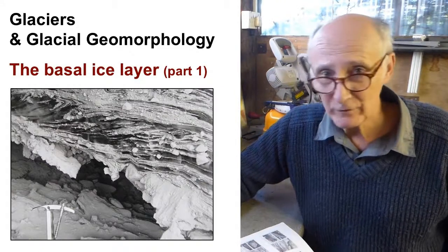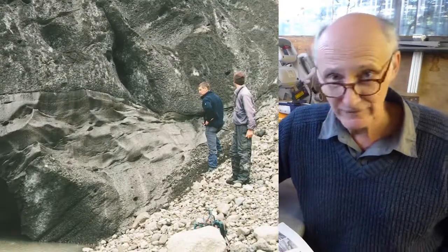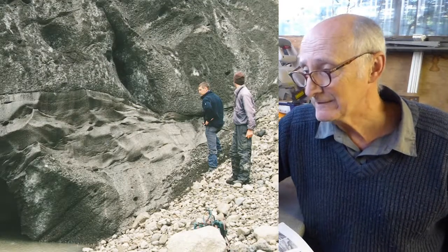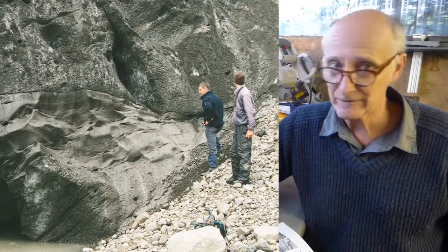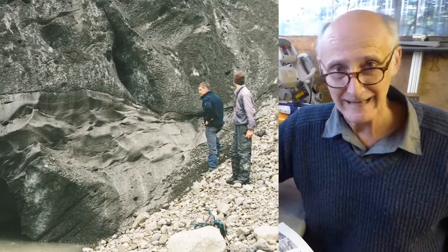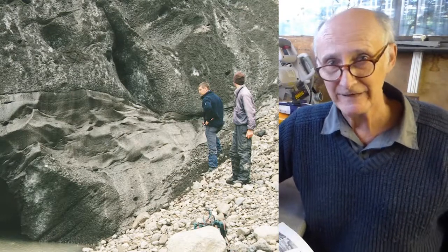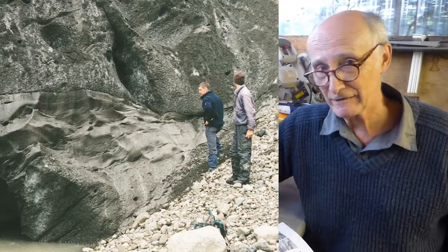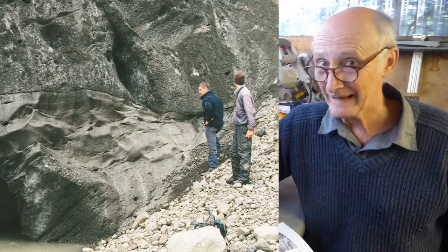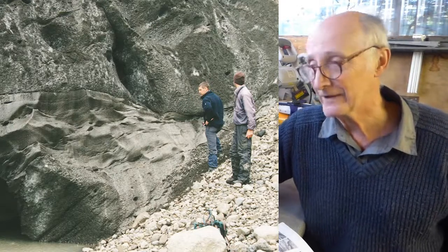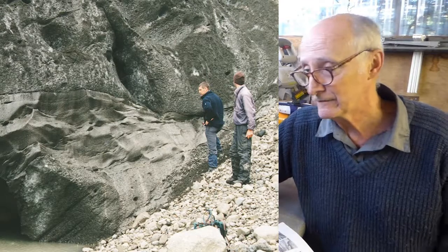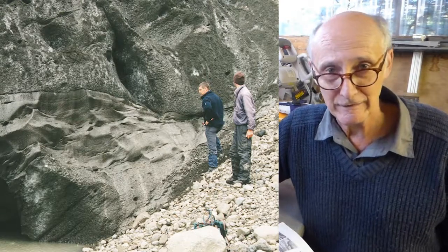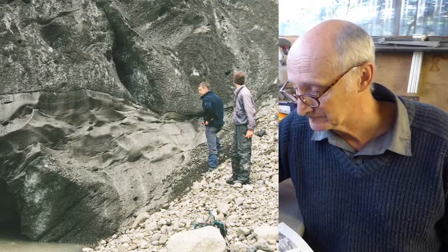It's really important for us to understand the basal ice layer; it's central to a lot of what we're talking about in this module, partly because the basal ice layer reflects processes that are happening in the inaccessible interior of a glacier. But we can see the basal ice and therefore figure out something about what's happening in the interior area, when we see the basal ice at the margin, for example as in this picture, or if we can see basal ice at the bottom of an ice core.